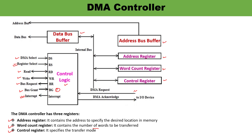DMA Request means a request is put for the DMA from the IO devices. When the request is fulfilled, a DMA Acknowledgement is sent to the IO devices, meaning the DMA now has the system buses so that IO devices can transfer data with the memory — a direct transfer of data can happen between the IO devices and the memory. There is an internal bus to select any of these registers, and whatever data is to be transferred will be moved with the help of the data bus and address bus.